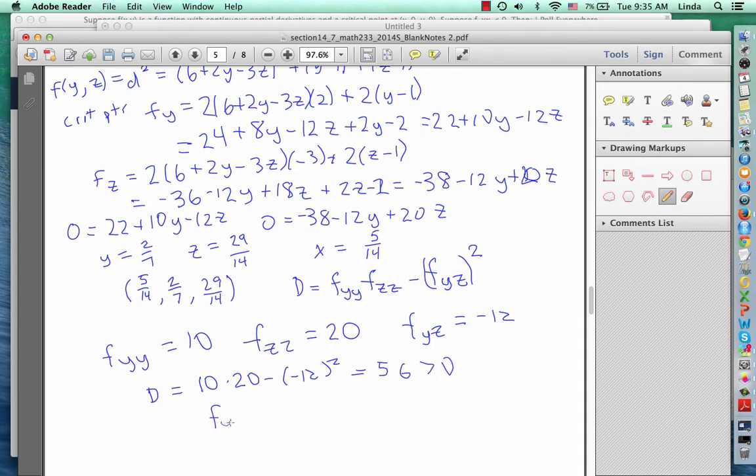And since f sub yy at the point that we're talking about, or actually everywhere, is also greater than 0, we know that we have a local minimum. And we've minimized distance, and if we plug in the point x, y, z into our equation for distance, we actually get the minimum distance, which turns out to be 5 over the square root of 14.